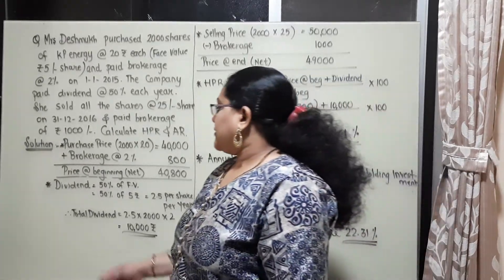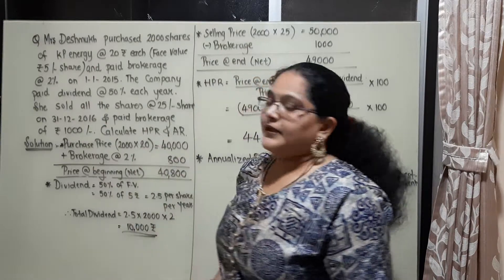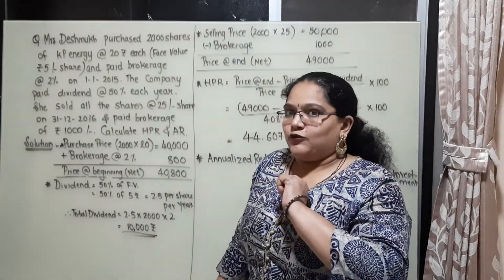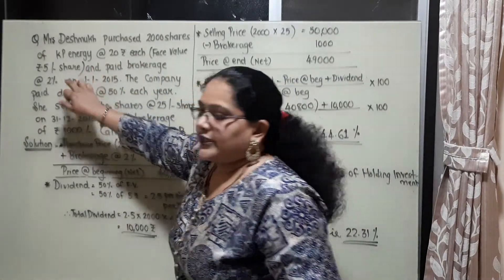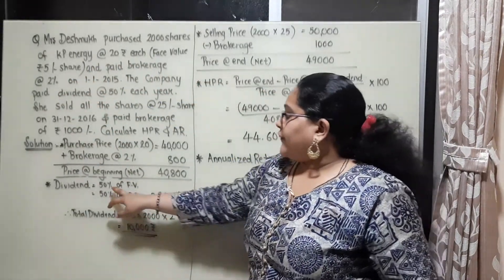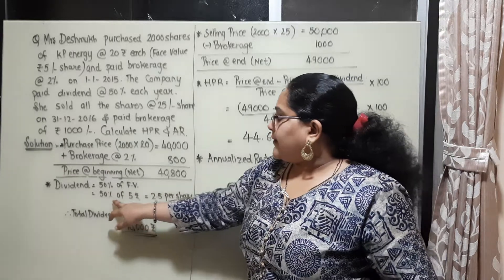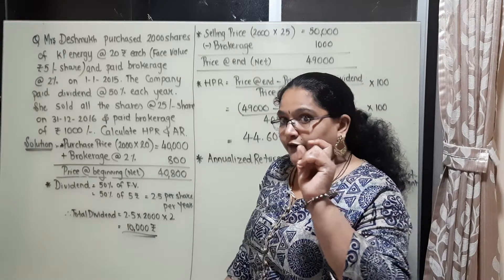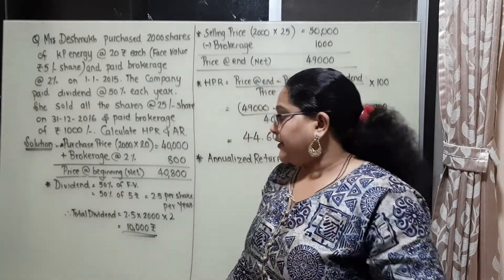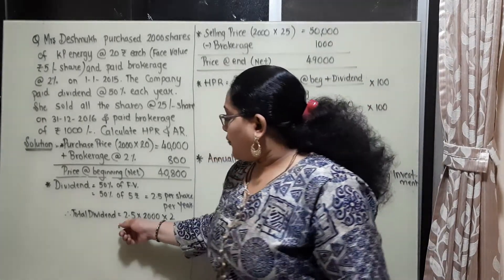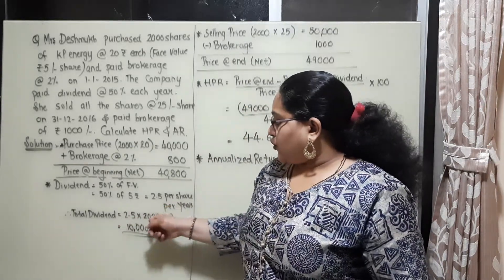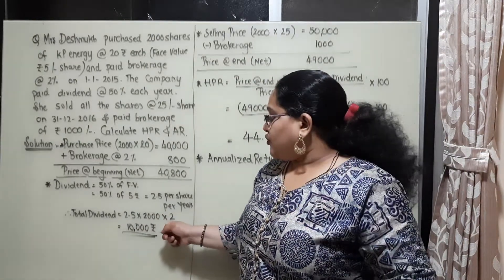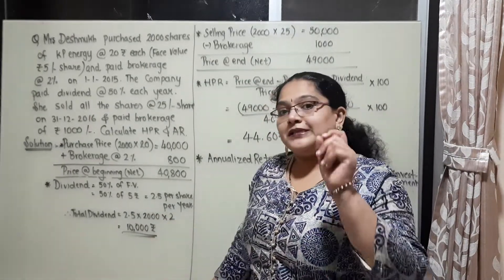The dividend calculation is slightly different. They said 50% dividend is paid each year. Dividend is always paid on the face value. The face value of the share is rupees 5, so 50% of 5 rupees is 2.5 rupees per share per year. Mrs. Deshmukh has 2000 shares and held for 2 years, so she got a total dividend of rupees 10,000.